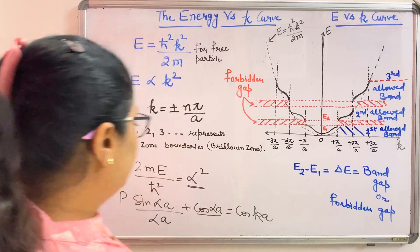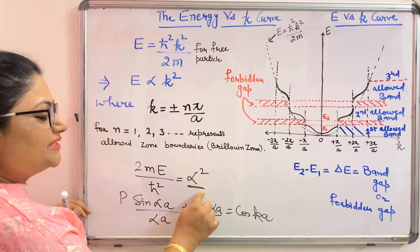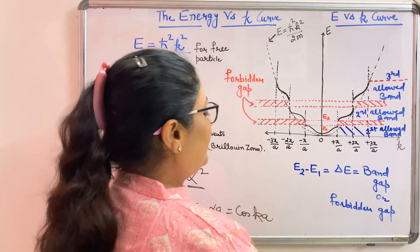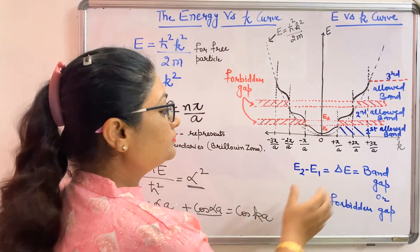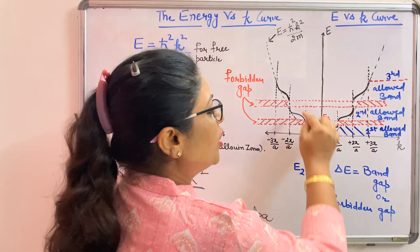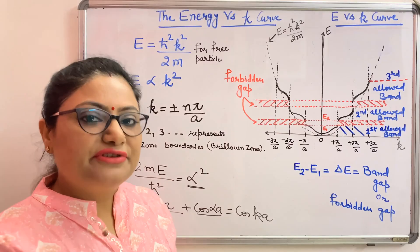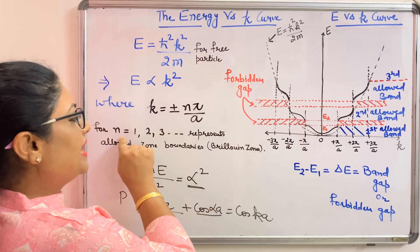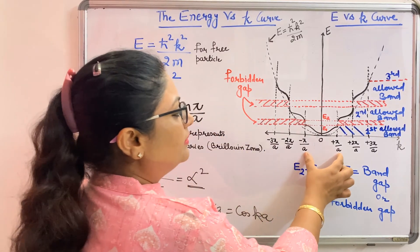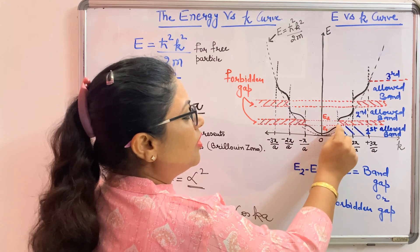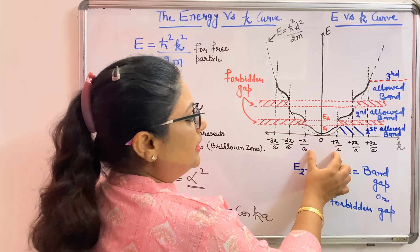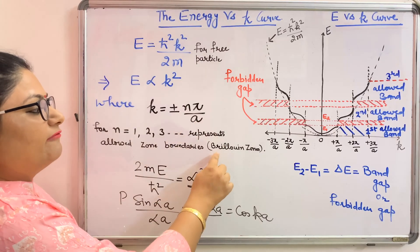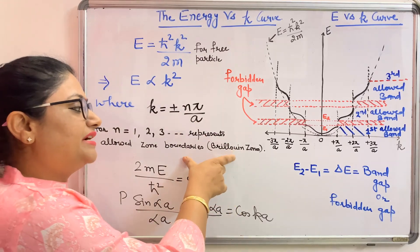Let us draw the curve. Alpha has allowed as well as forbidden values. If we plot energy versus k, the curve will not be continuous for a particle moving in a periodic lattice. For the first zone where n = 1, k ranges between ±π/a. The energy of the particle is a continuous curve in this first band. Then at ±π/a there will be a discontinuity because this represents the zone boundary.